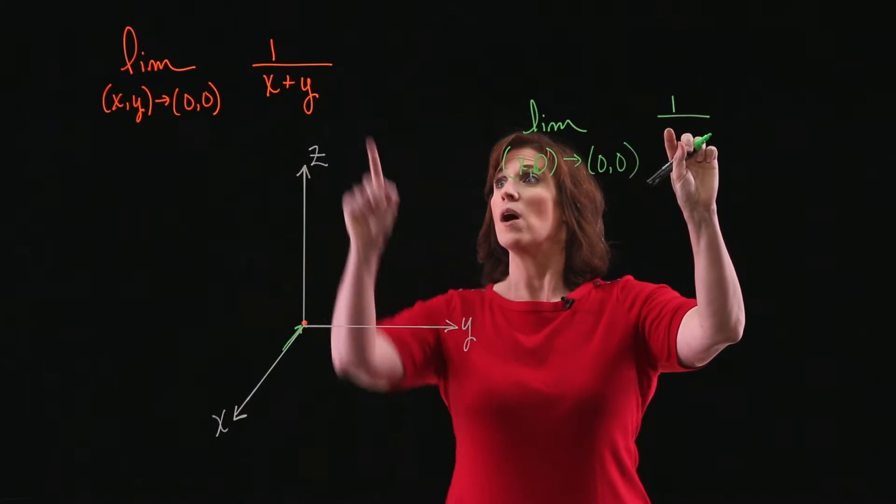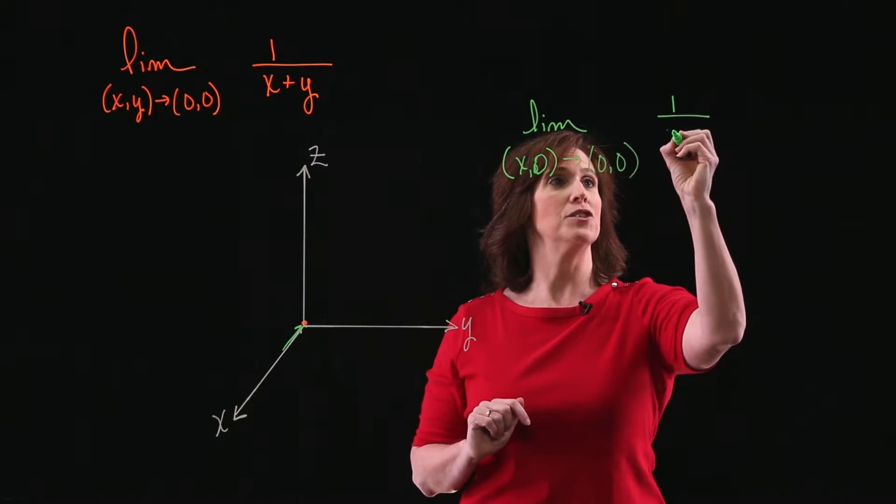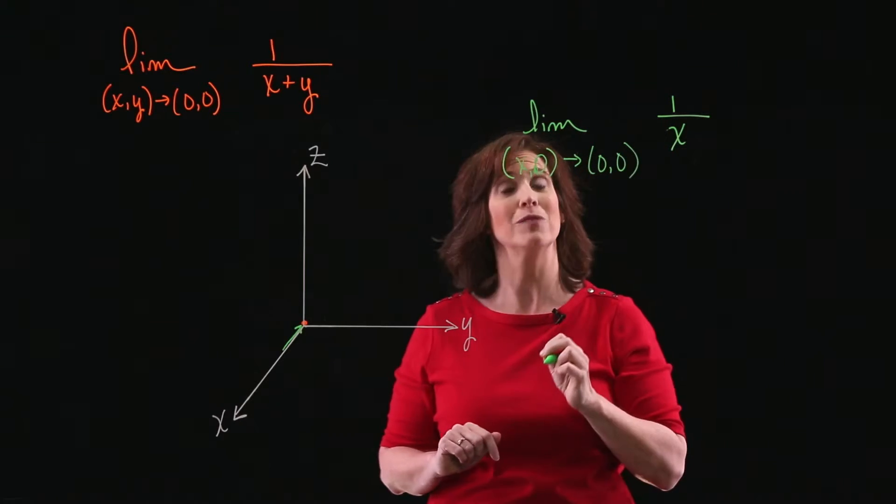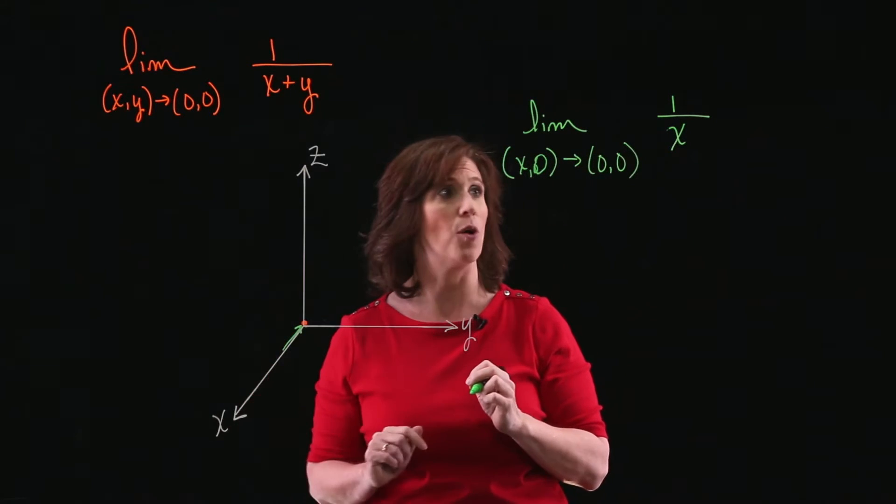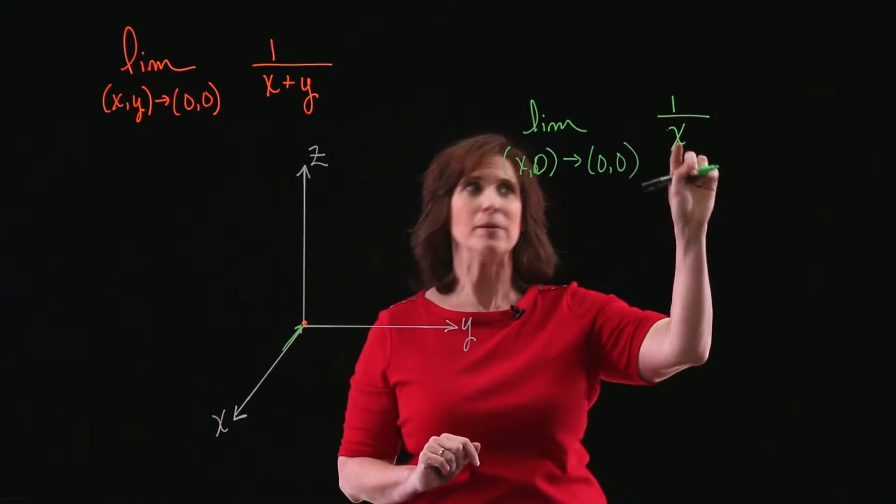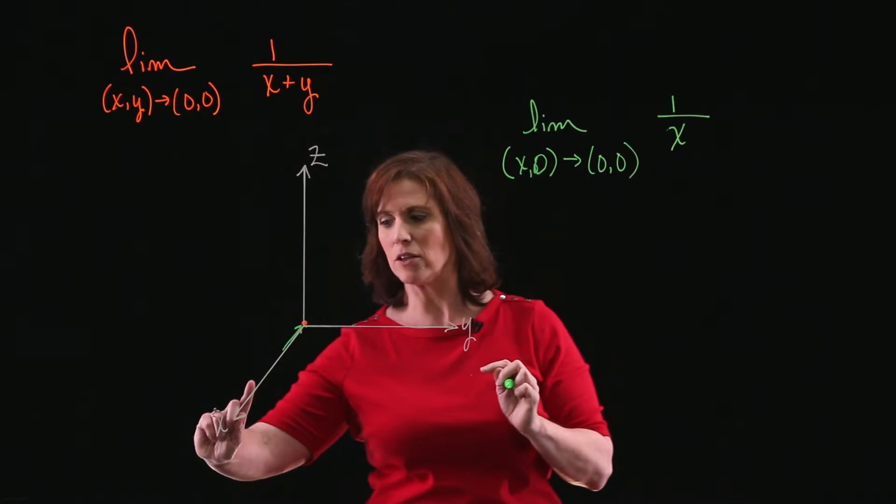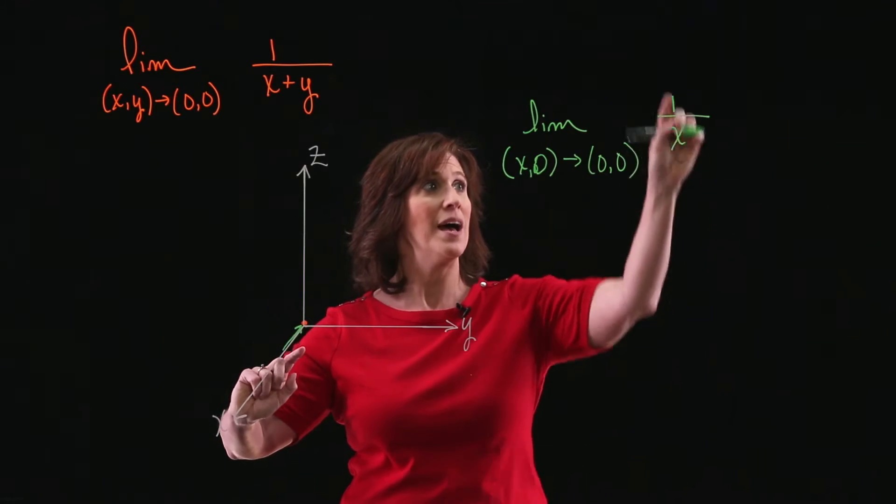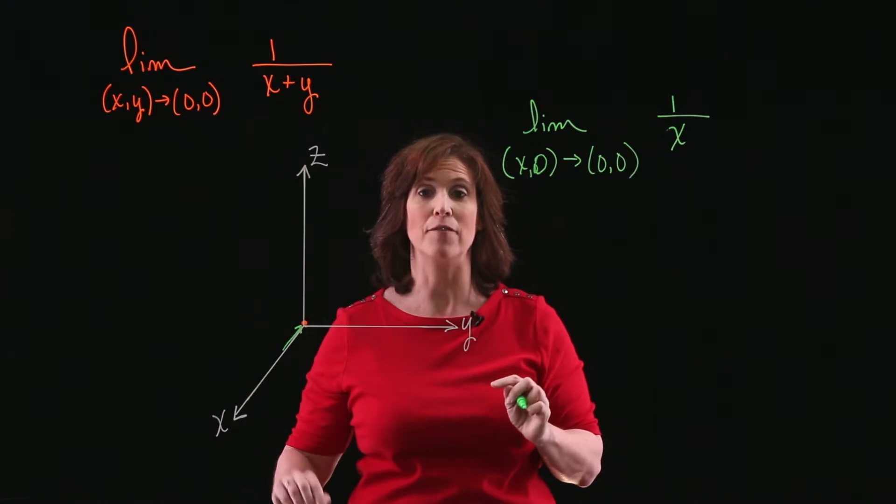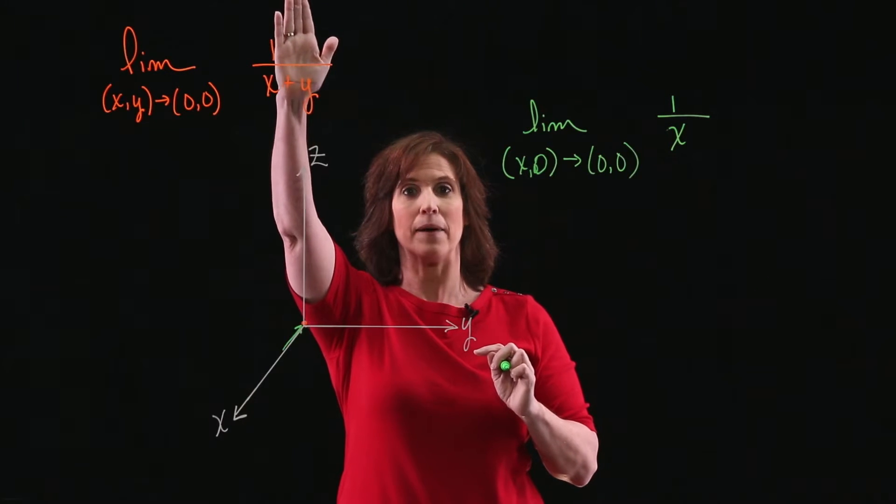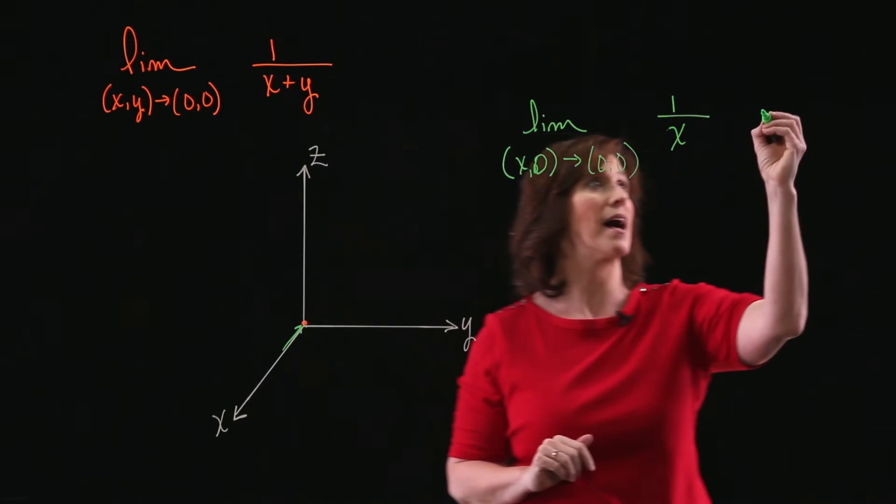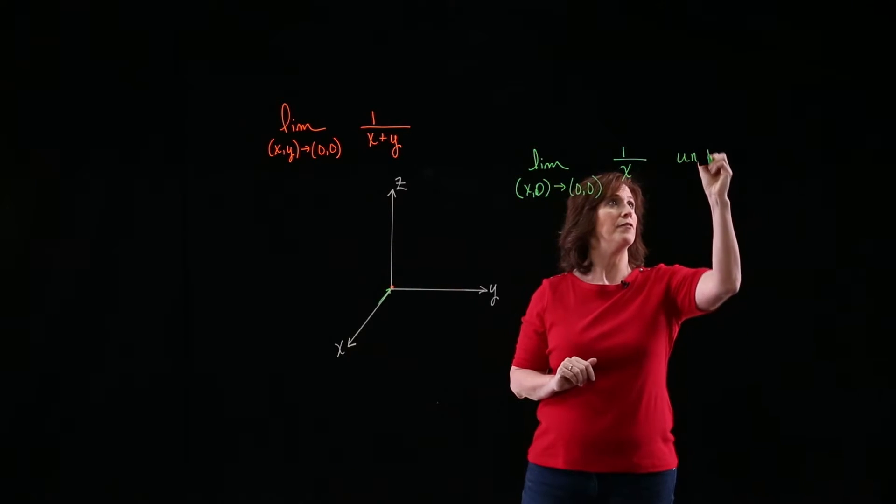So in this case, 1 over (x + y) is going to turn into 1 over (x + 0). Because again, the y value is always 0. And what happens to 1 over x as x gets close to 0? Well, because I'm coming along on the positive x value, I know this thing has unbounded behavior in a positive direction. So it's going up as a vertical asymptote. So this has unbounded behavior.